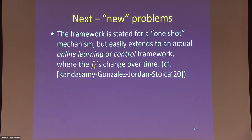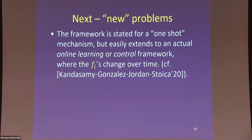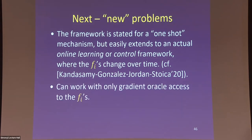Everything we discussed is one-shot, but it's very easy to extend to an online setting where f_i's change over time — like in reinforcement learning or resource allocation in a server farm where demand functions change. You can easily interleave that kind of process with this framework. Also, all we need is a gradient oracle for f_i — a plus in many settings since we don't need complicated global knowledge.